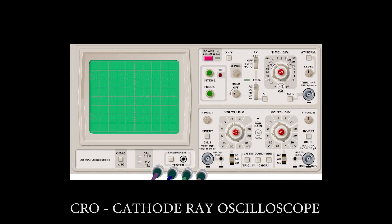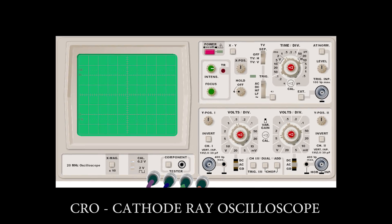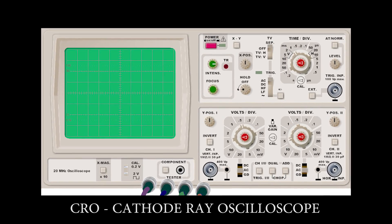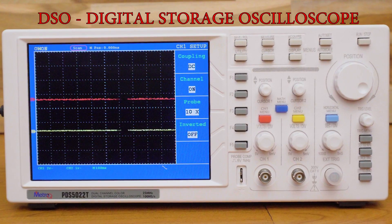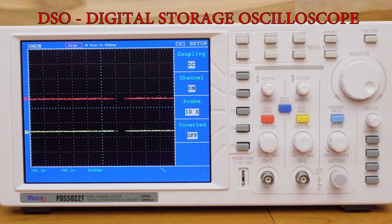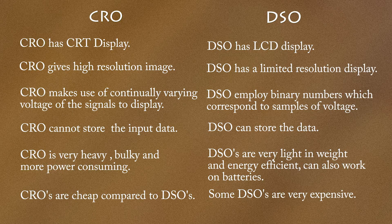There are two types of oscilloscopes, that is a CRO and a DSO. CRO is a cathode ray oscilloscope, DSO is a digital storage oscilloscope, which is the latest one. So there are some differences between these two, let me just show you what are those.